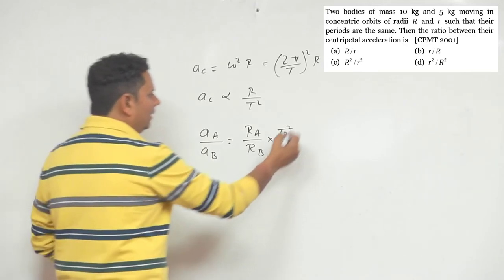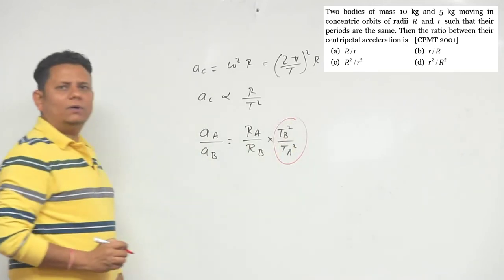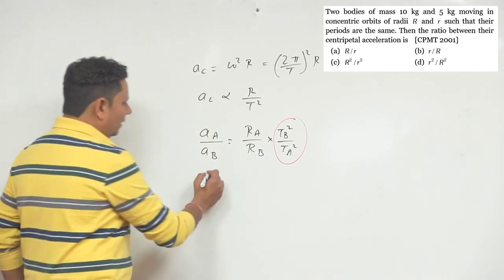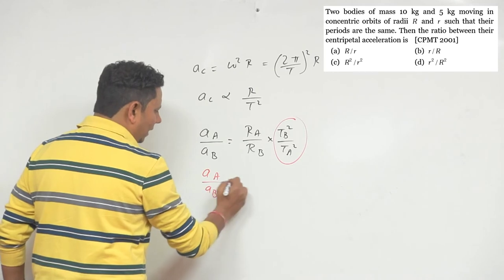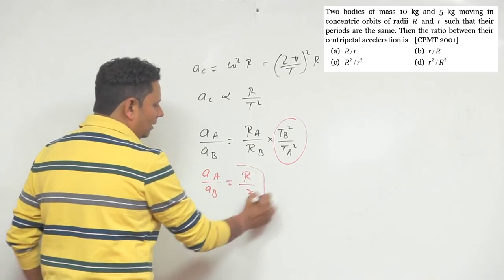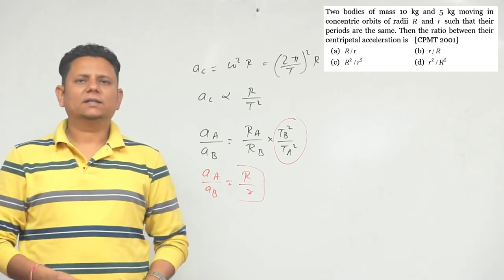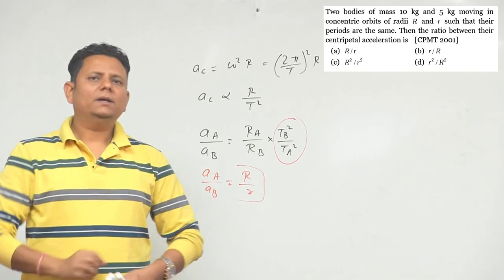Now this is given that T_A and T_B, the time periods, both are equal. So the ratio which is required is r_A divided by r_B, which is R divided by r. So based on this we can say that option number A would be the correct answer.